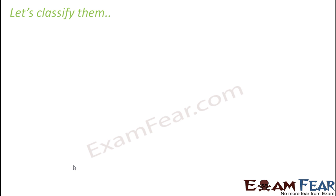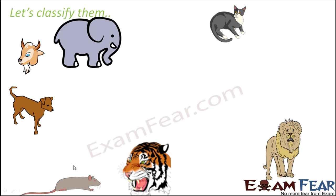Let's classify some animals: herbivores eat plants, carnivores eat animals, and omnivores eat both. An elephant is a herbivore because it eats only plants. A goat is also a herbivore.